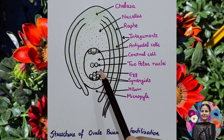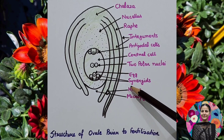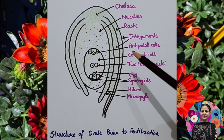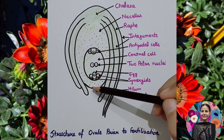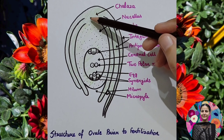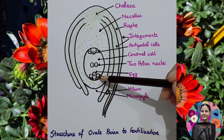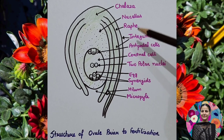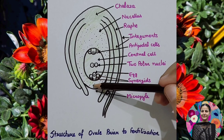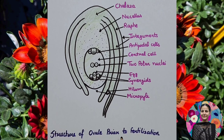On the upper side of the embryo sac, there are antipodal cells at the opposite pole from the egg. The opening through which the pollen tube enters is called the micropyle. The egg and synergids together form the egg apparatus.